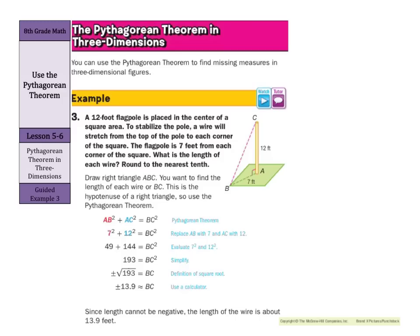Now, you can use the Pythagorean theorem to find measures in three-dimensional figures, and you can see the dotted lines here. A 12-foot flagpole is placed in the center of a square area. To stabilize the pole, a wire will stretch from the top of the pole to each corner of the square. The flagpole is 7 feet from each corner of the square. What is the length of each wire? Round to the nearest tenth.